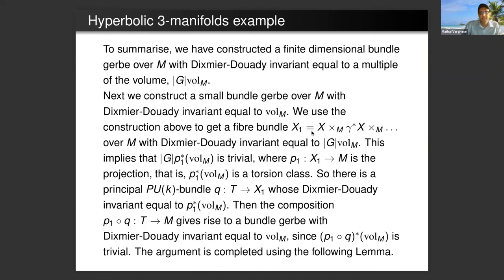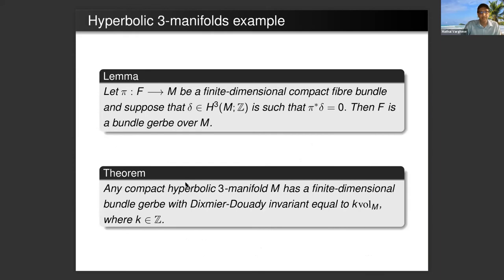We do get a finite dimensional bundle gerbe, but its Dixmier-Douady invariant is the wrong thing. It's too large. It's the number of elements in G times volume of M. But we can fix this as follows. First of all, we use construction above to get a fiber bundle. You take X and take the fiber product over M of X and γ^* X and do this for each element γ in G.